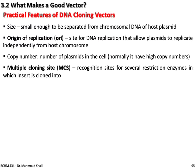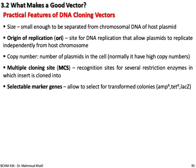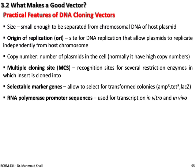Multiple cloning site, also called a polylinker, is a region in the plasmid that has several restriction enzyme sites where you insert the gene. Selectable marker genes, such as antibiotic resistance, allow selection of transformed colonies. Promoter sequences are used for transcription in vitro and in vivo. All of these are practical features of plasmids used in recombinant technology.